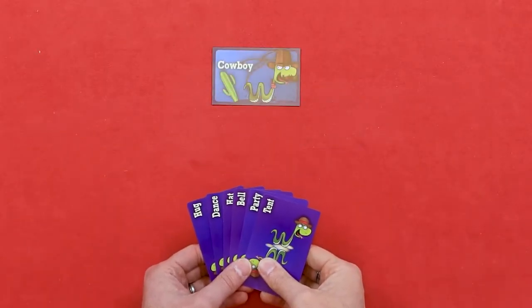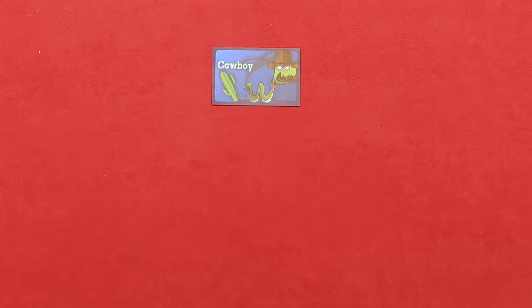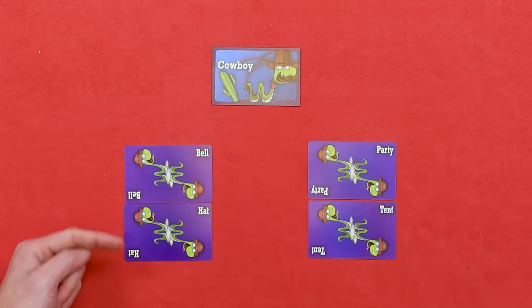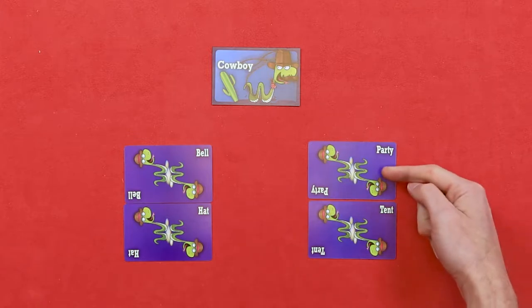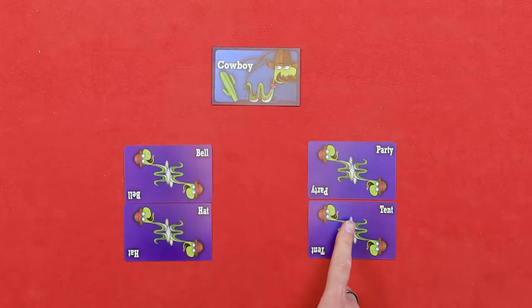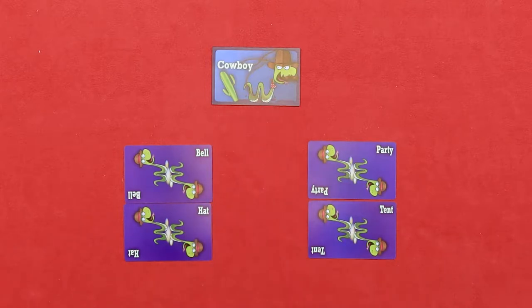All the snake oil salespeople: have a look at your word cards and put two together to make a product you want to sell that customer. For example, if the customer is a cowboy, you may try to sell a bell hat to them, or how about a party tent? Everyone takes 30 seconds to decide what product they are going to sell. Remember, it's for the customer, so think about what that kind of customer would want to buy.